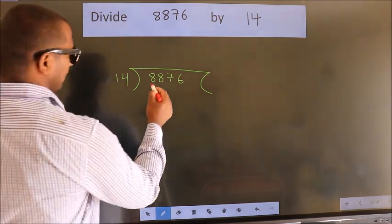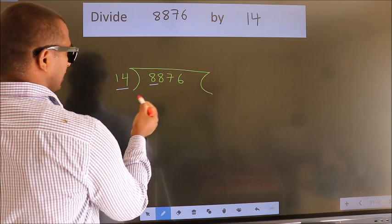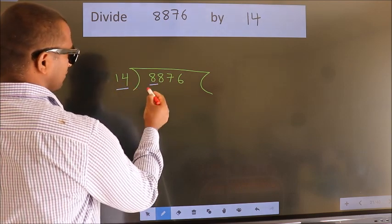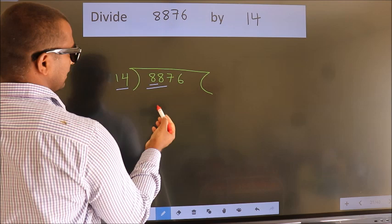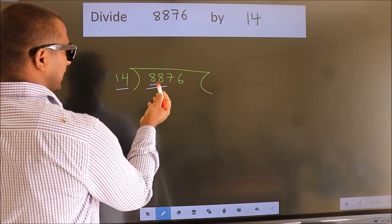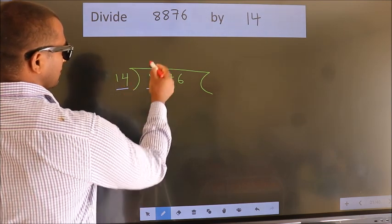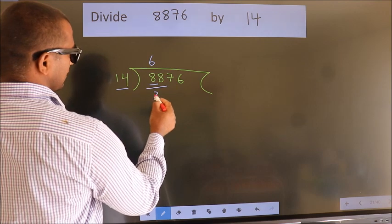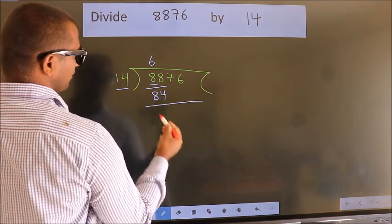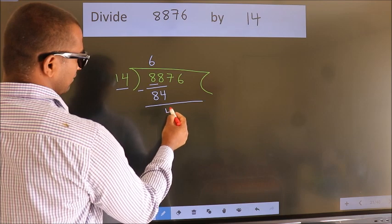Here we have 8, here 14. 8 smaller than 14, so we should take two numbers, 88. A number close to 88 in 14 table is 14 times 6 equals 84. Now we should subtract. We get 4.